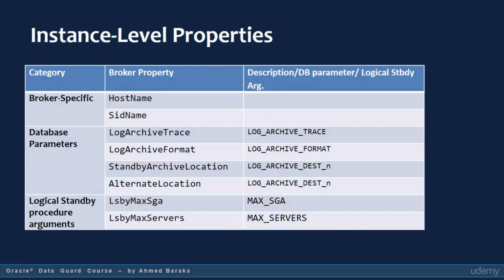This table lists the instance-level broker properties. These properties are considered instance-level because they are the only properties that can differ among the RAC database instances in a broker configuration.